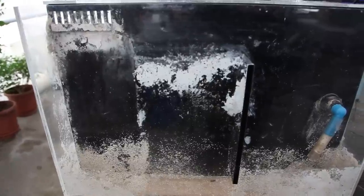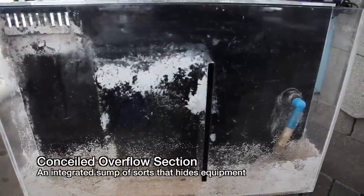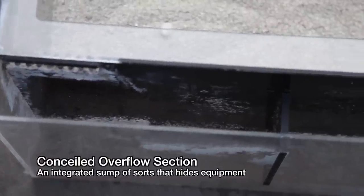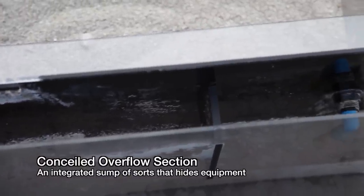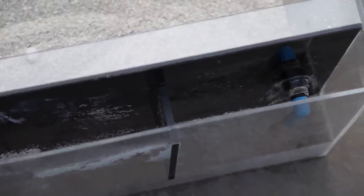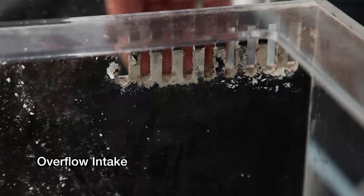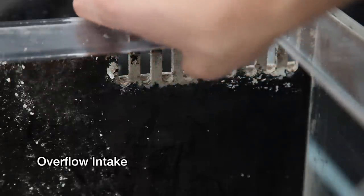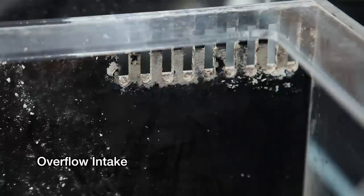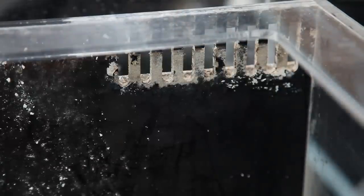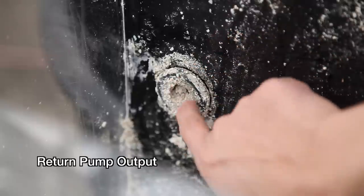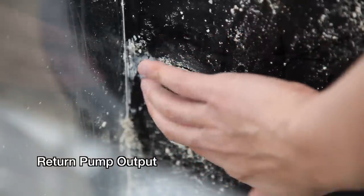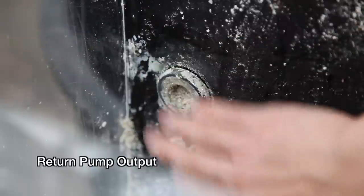Although a little beaten up, the tank is not without some redeeming qualities. It has a back partition that acts as a sump where equipment can be hidden from view. The water from the display overflows into the partition through a grate at the top right of the aquarium. Given the size and number of teeth in the overflow, it can probably handle about 300-400 gallons per hour of water flow. As the water flows through the sump area, it finally gets pumped back to the display through the small bulkhead on the left of the aquarium.